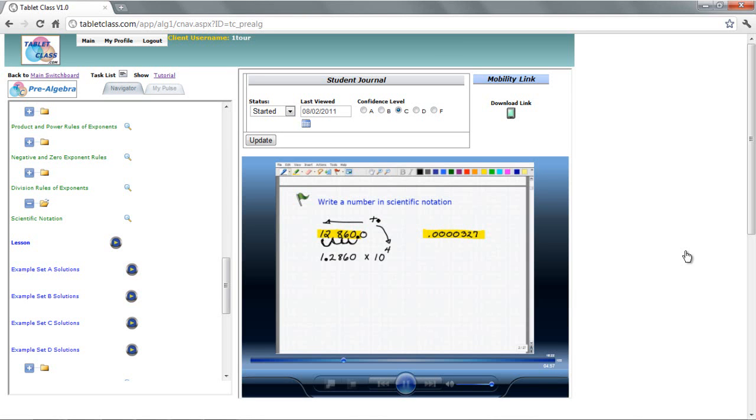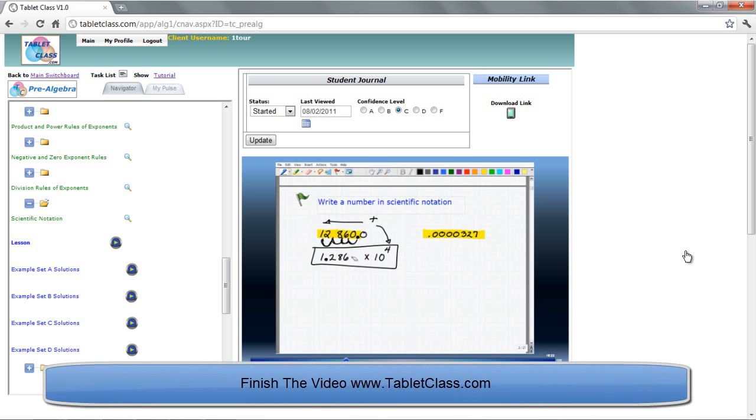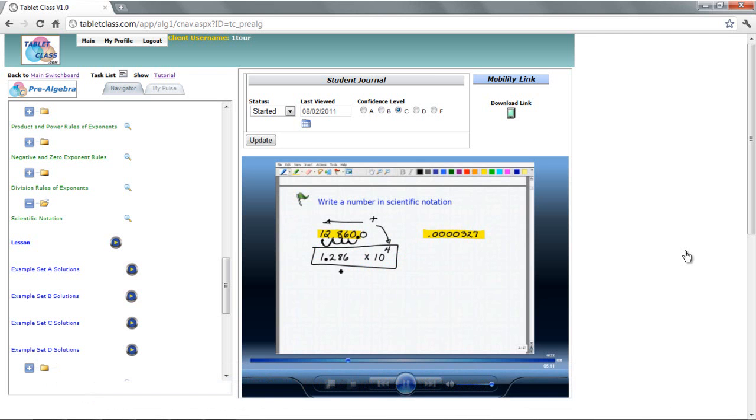And guess what? We're done. 1.286, and you can actually even drop this 0, times 10 to the 4th power is equivalent to 12,860. The difference is 1.286 times 10 to the 4th is a number in scientific notation form. And it makes sense.